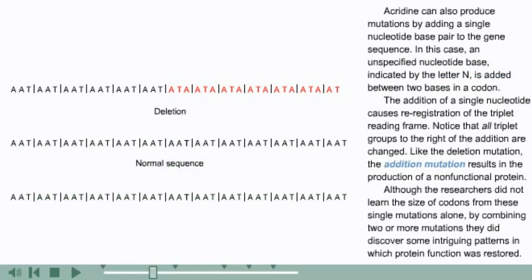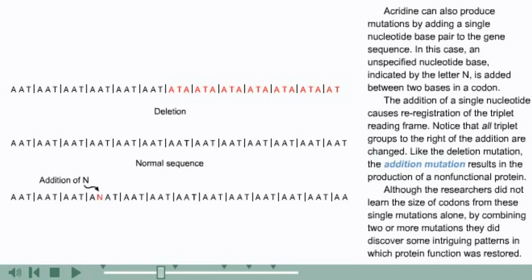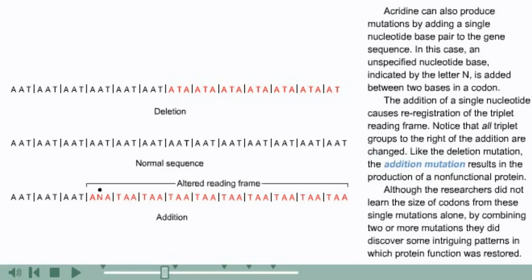Acridine can also produce mutations by adding a single nucleotide base pair to the gene sequence. In this case, an unspecified nucleotide base, indicated by the letter N, is added between two bases in a codon. The addition of a single nucleotide causes re-registration of the triplet reading frame. Notice that all triplet groups to the right of the addition are changed. Like the deletion mutation, the addition mutation results in the production of a non-functional protein.